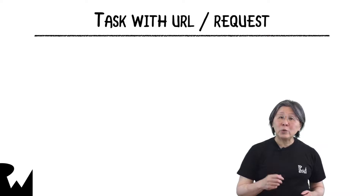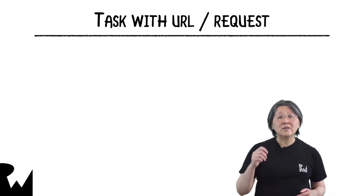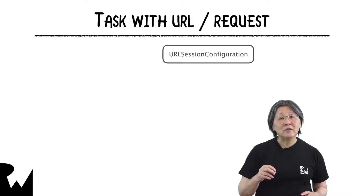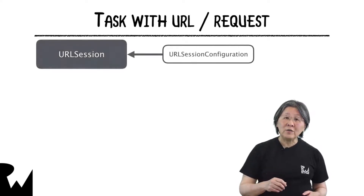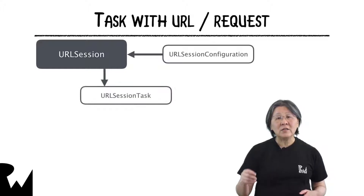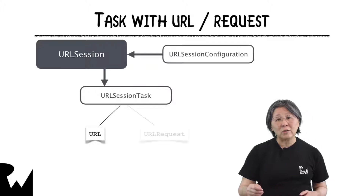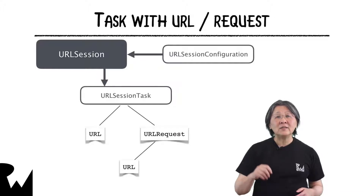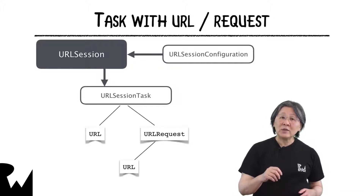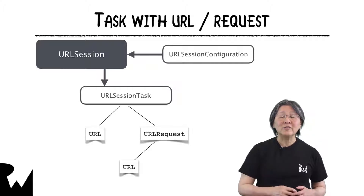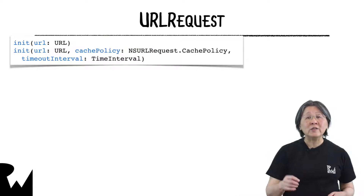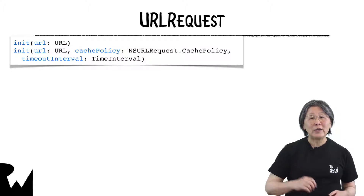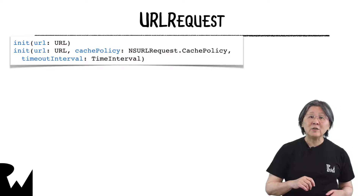A networking app sends requests to servers. The workflow starts with a session configuration, unless you use the shared session which uses the default configuration. You can customize the configuration, then create a session with that configuration. The session creates tasks. Each task is created with a URL or with a URL request, which is created with a URL. The task, and hence the request, uses the settings in the session's configuration, but the request can override some of the configuration's settings. You create a URL request from a URL, with an initializer that lets you specify cache policy and timeout interval values different from the session configuration.